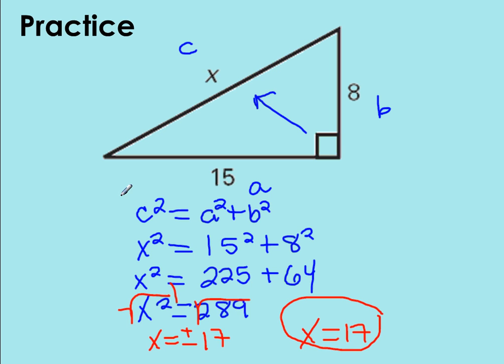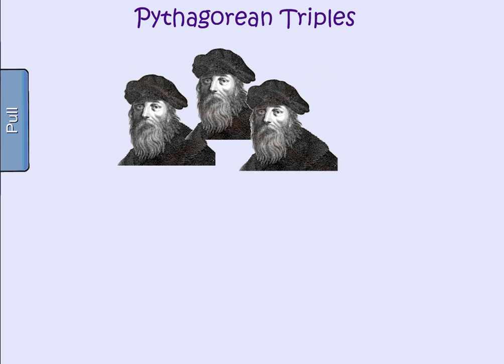You might also notice that the way I set this up might be backwards from what you're used to seeing. A lot of people usually say that the Pythagorean Theorem is A squared plus B squared equals C squared. However, this setup is going to be helpful for you when we end up getting to the next section. So if you could, practice writing it as C squared is equal to A squared plus B squared.